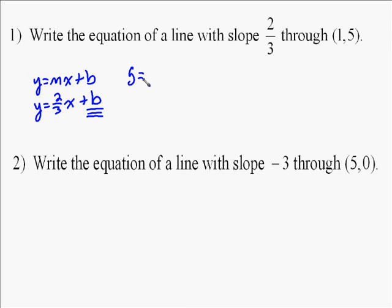the way this works is y equals two-thirds x plus b has to make the point true. So we substitute that point in to find out what we need for b to be for it to be true. So we put 5 for y because it's the y-coordinate, 1 for x equals the x.